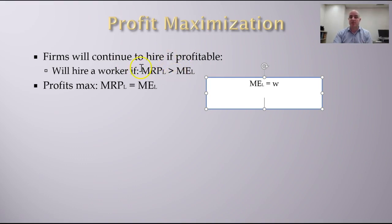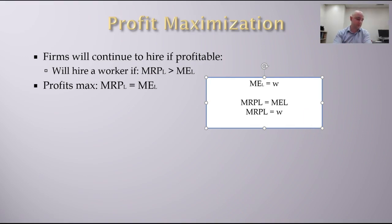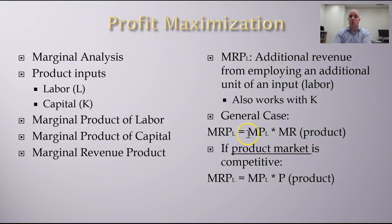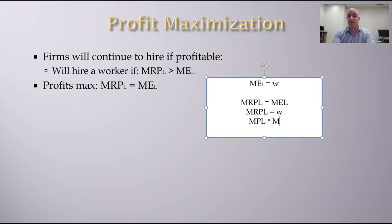Anywhere up to that point, the firm makes more revenue than it costs them, so profits go up as they employ up to that point. We have the marginal revenue product of labor equals marginal expense of labor, and we know marginal expense of labor equals the wage. Going back, the marginal revenue product of labor is the marginal product of labor times the marginal revenue.